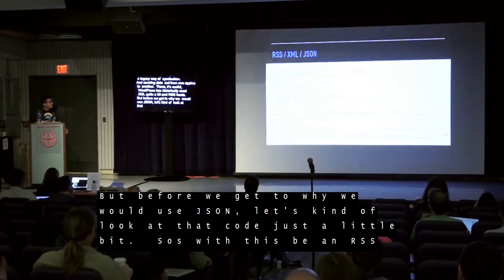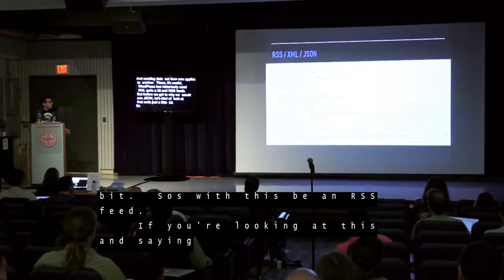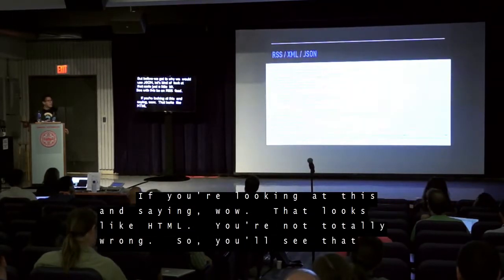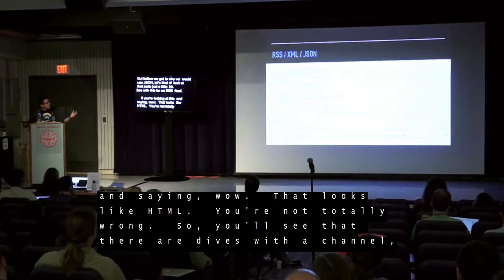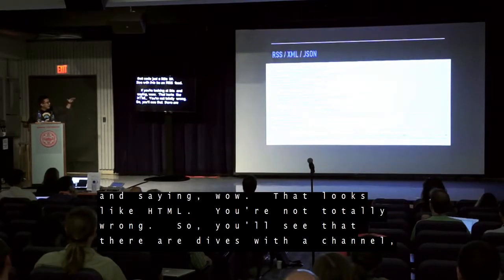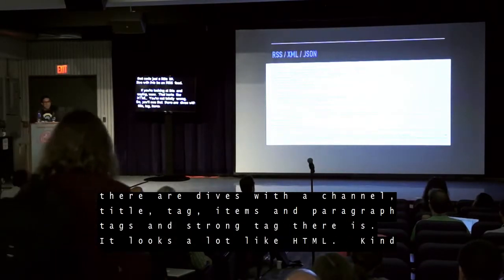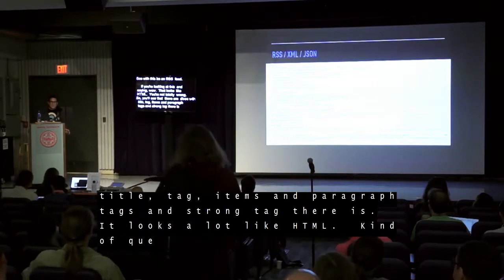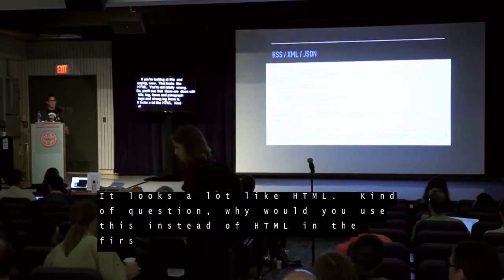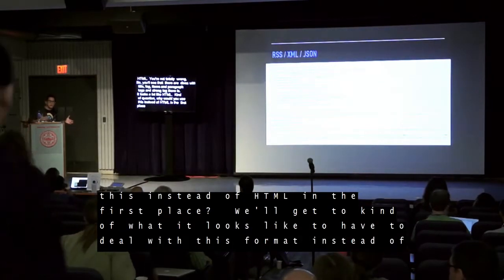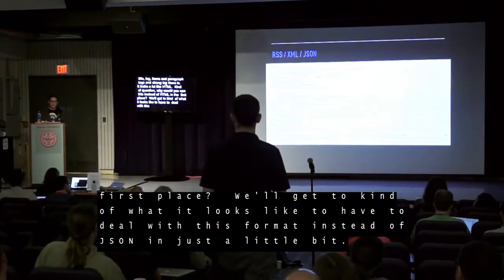This is an RSS feed. If you're looking at this saying it looks like HTML, you're not totally wrong. You'll see there are tags like channel, title, items, paragraph tags, and strong tags. Kind of begs the question: why would you use this instead of HTML? We'll get to what it looks like to deal with this format instead of JSON in just a little bit.